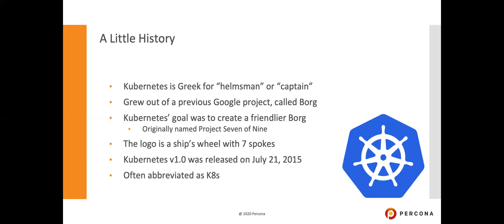A little bit of background: the word Kubernetes itself is a Greek word meaning helmsman or captain. You can envision Kubernetes as the person driving the ship. This actually started as a Google project called the Borg project. If you think back to Star Trek and the Borg collective, there was a character called Seven of Nine — and in fact, this original project was called Project Seven of Nine.